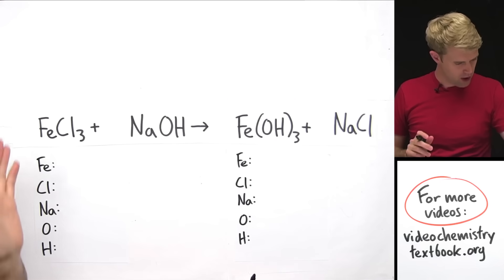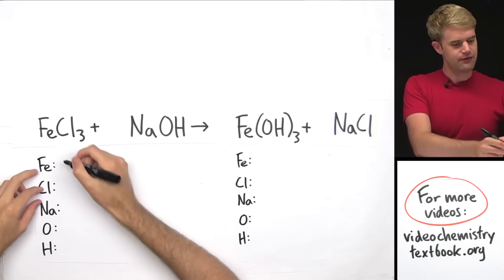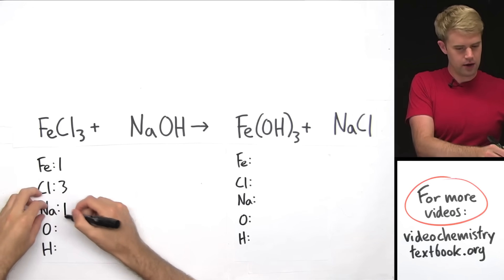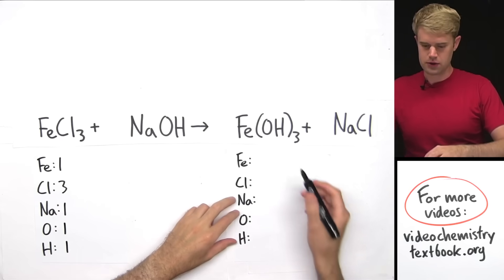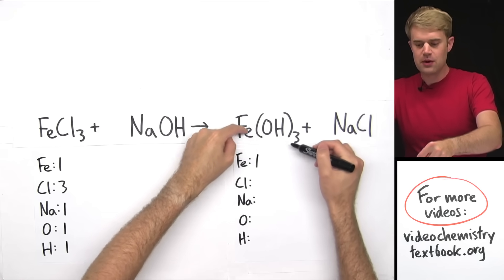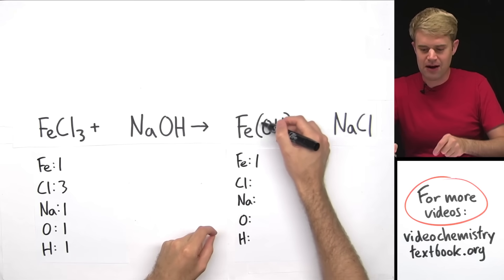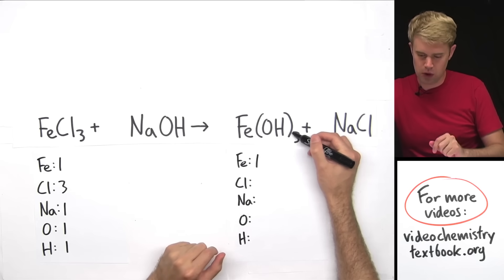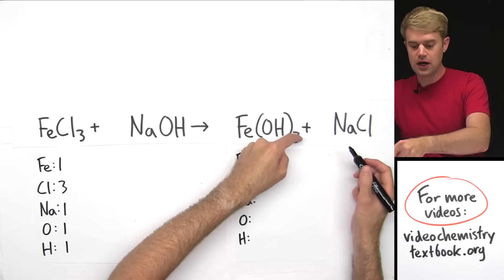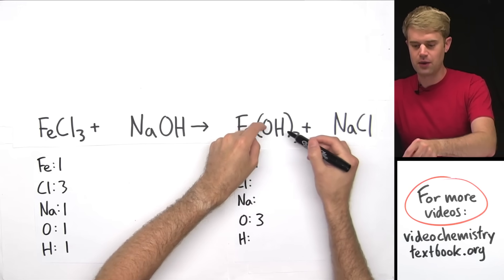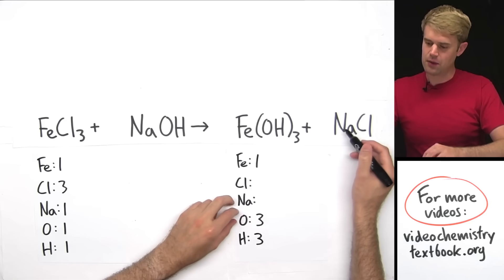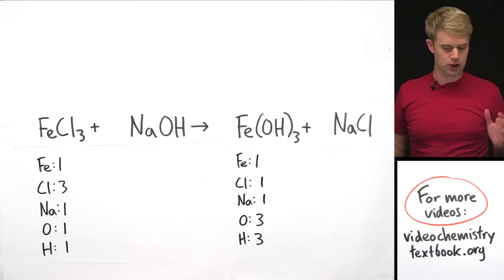This equation has five different elements and parentheses. On the left: one Fe, three Cl, one Na, one O, and one H. On the right: one Fe, and then the parentheses mean everything inside is multiplied by three — so three O's and three H's — plus one Na and one Cl.